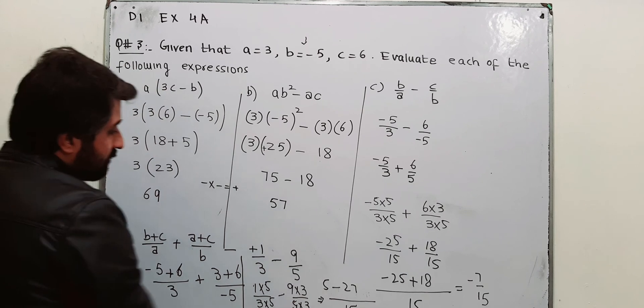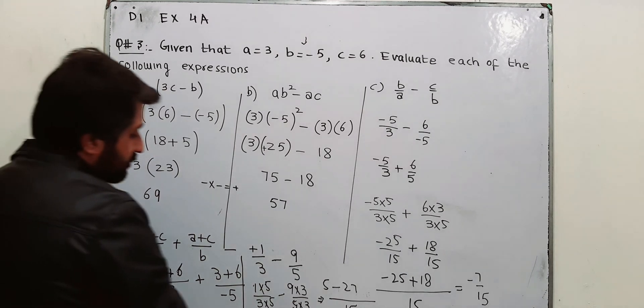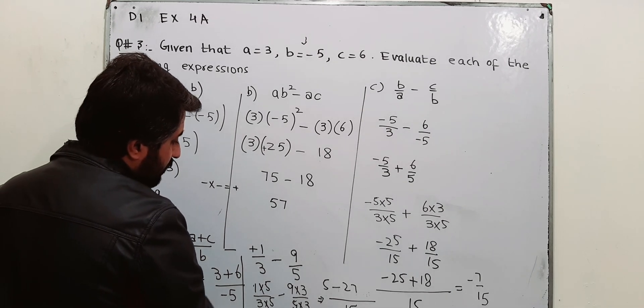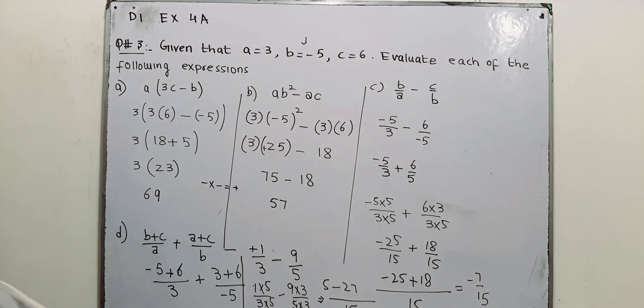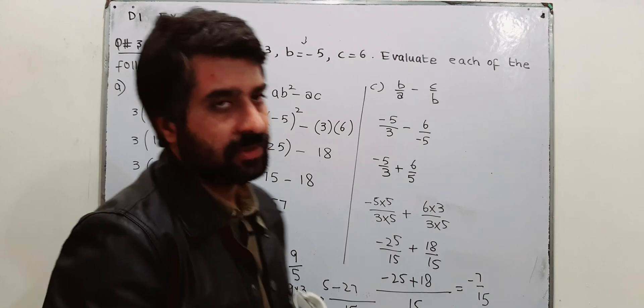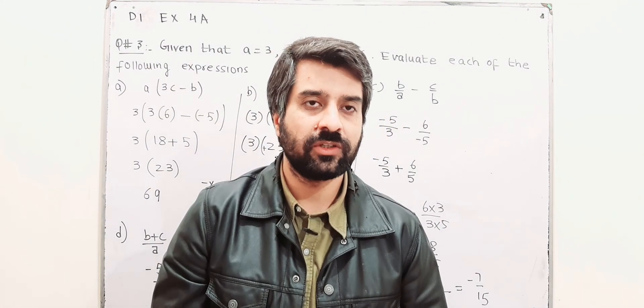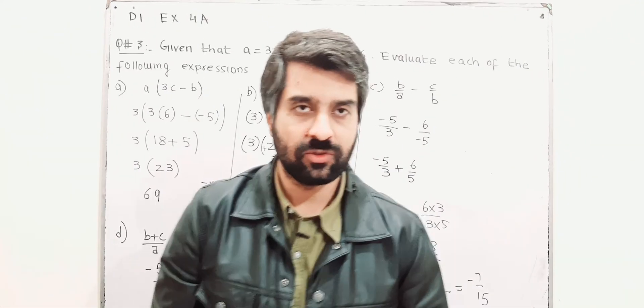Your result will be 5 minus 27 is minus 22 over 15. This is the solution of question number 3 of this exercise. I will upload the solution for the next question in my next video. Thank you so much.